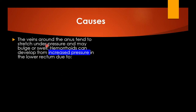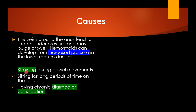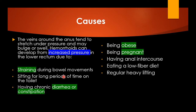The veins around the anus tend to stretch under pressure and may bulge or swell. Hemorrhoids can develop from increased pressure in the lower rectum due to several factors: straining during bowel movements, sitting for long periods on the toilet, chronic diarrhea or constipation, obesity, pregnancy, anal intercourse, eating a low-fiber diet, and regular heavy weight lifting.